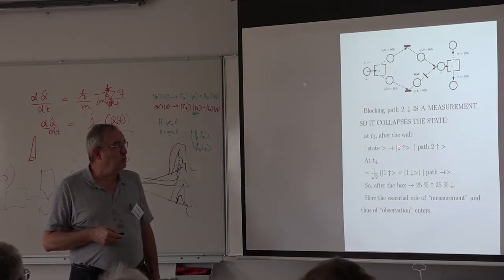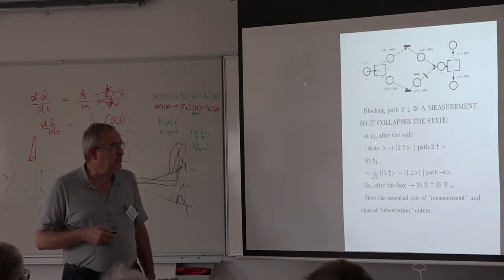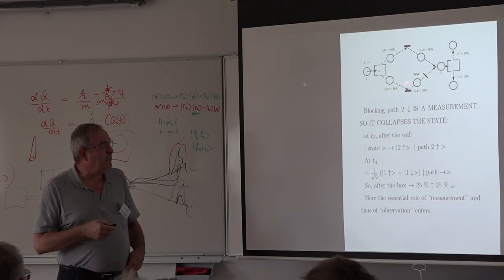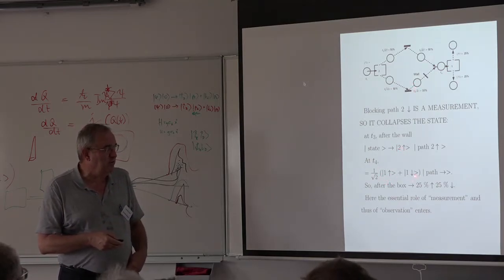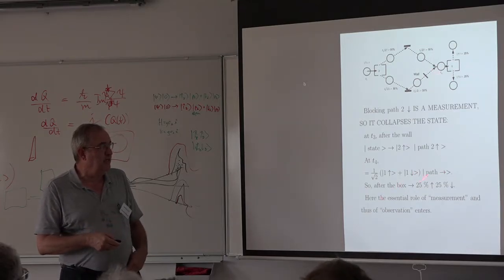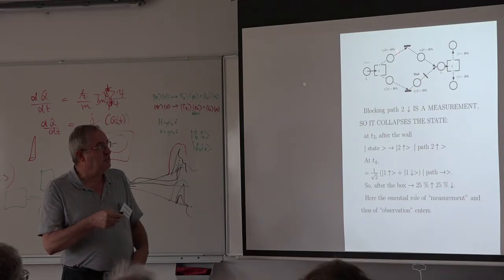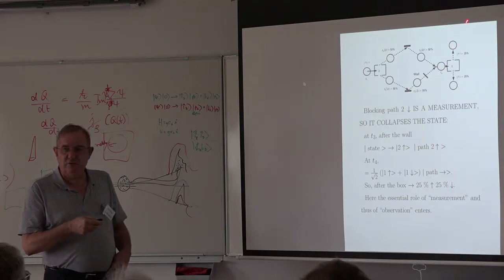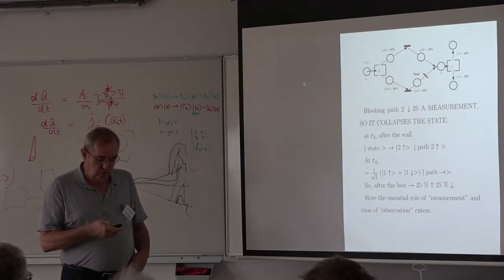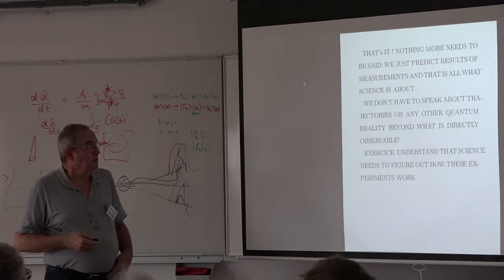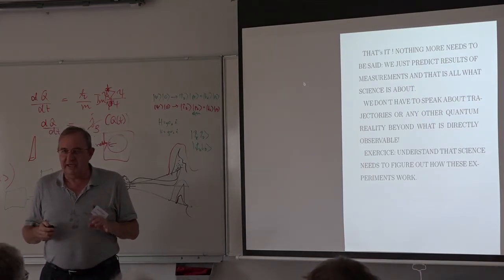This explains the so-called memory of the initial state. Even though if you measure spin in the two-direction here you find two-up and two-down, and in the one-direction you get 50-50, you recover 100% there after recombination. If you block path two-down, it's like a measurement that collapses the state — after the wall, the state will be only path two-up times spin two-up. When you recombine, this gives two-up, which is one-up plus one-down, and now measuring in direction one gives half-up and half-down — hence 25-25%. In orthodox quantum mechanics, there is nothing more to be said: we just predict results of measurement, and that's what science is about.